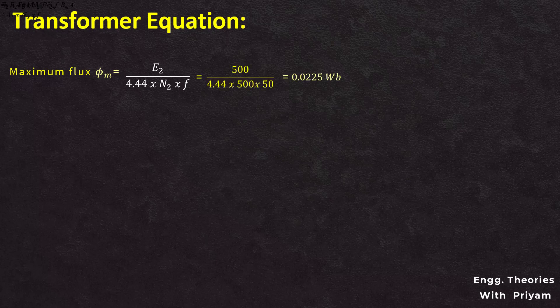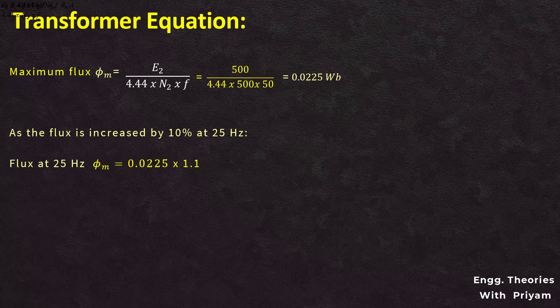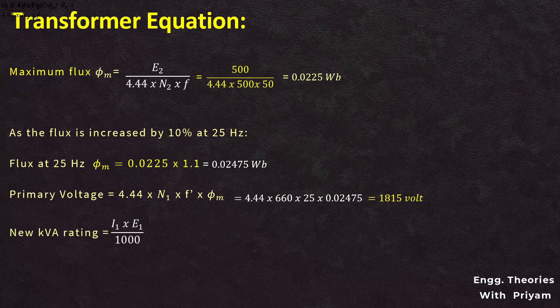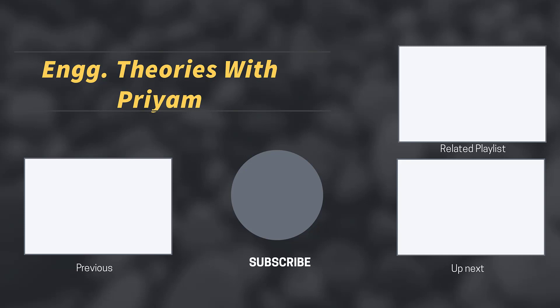If the frequency is changed to 25 Hz and the flux is increased by 10 percent, the new maximum flux equals 0.0225 × 1.1 = 0.02475 Weber. The new primary voltage V1 equals 4.44 into N1 into f into φm. Putting in N1 = 660, f = 25 Hz, and φm = 0.02475, the primary induced voltage equals 1815 volt. The new kVA rating equals V1 × I1 divided by 1000, which with I1 = 30.3 and V1 = 1815 gives a new kVA rating of 55 kVA.